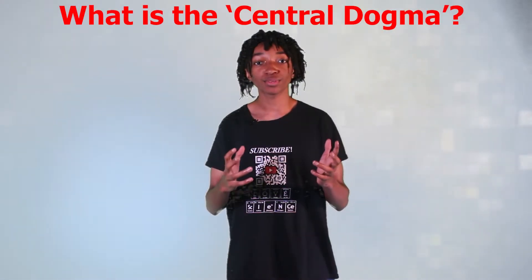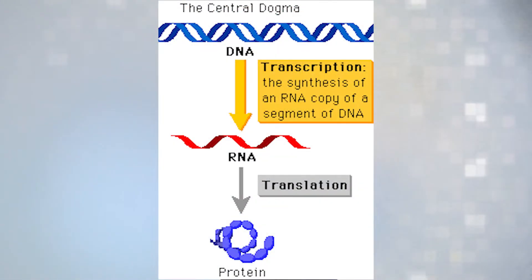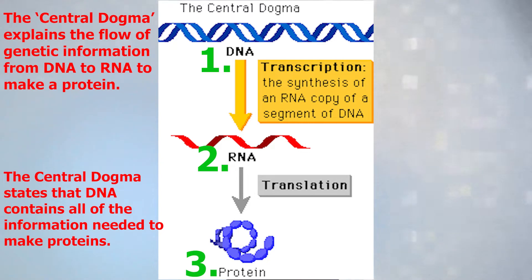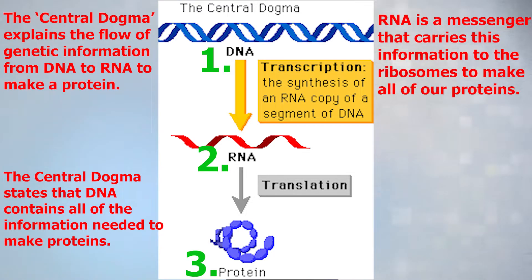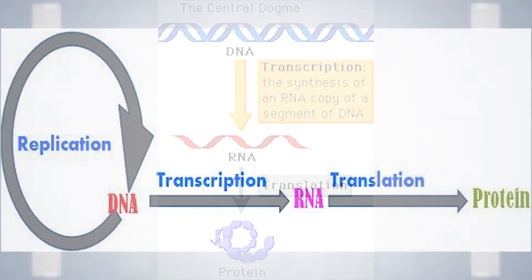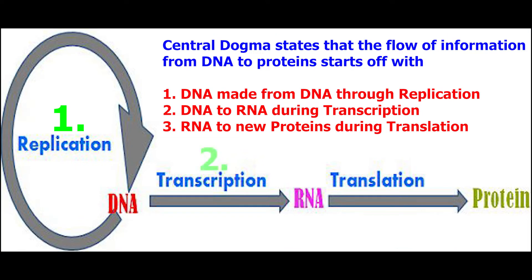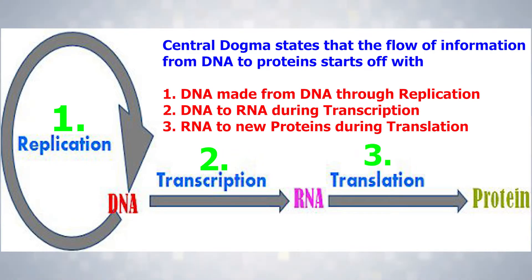So what is the central dogma? That's an excellent question. The central dogma explains the flow of genetic information from DNA to RNA to make a protein. The central dogma states that DNA contains all of the information needed to make proteins, and that RNA is a messenger that carries this information to the ribosome to make all of our proteins. The flow of information from DNA to protein starts with DNA replication, then transcription from DNA to RNA, and then translation from RNA to make new proteins.